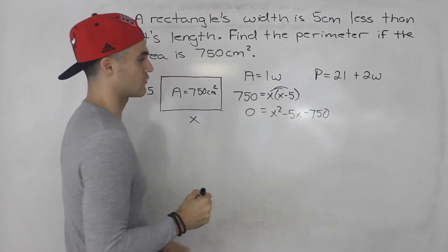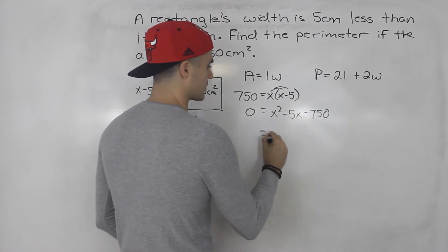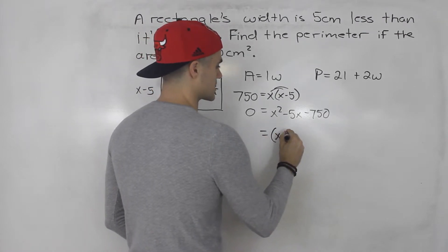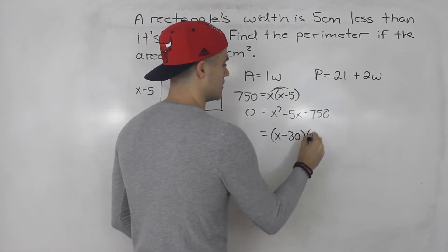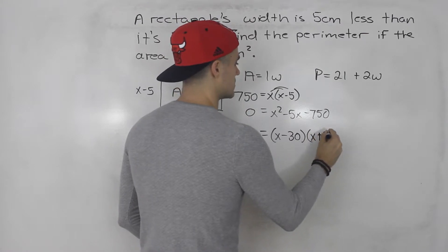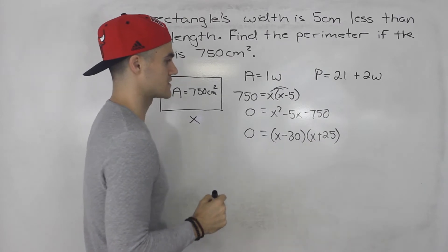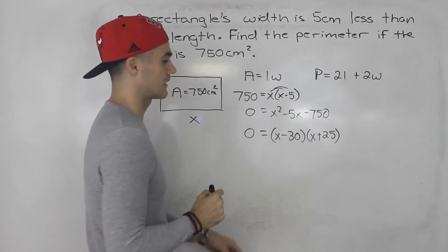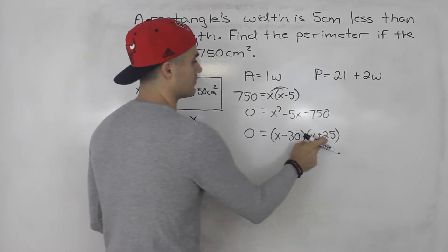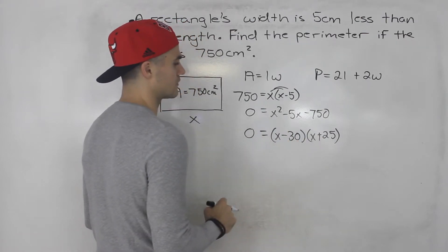You could throw this into the quadratic formula if you want, but it actually factors smoothly. This factors into x minus 30 times x plus 25, because negative 30 times positive 25 gives you negative 750, and negative 30 plus 25 gives you negative 5.